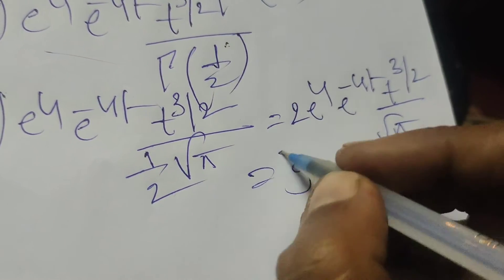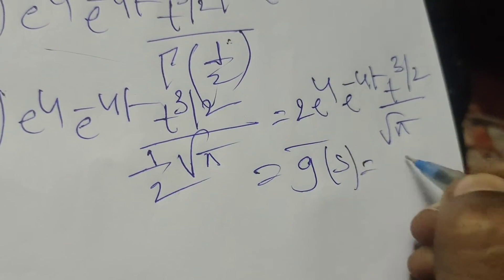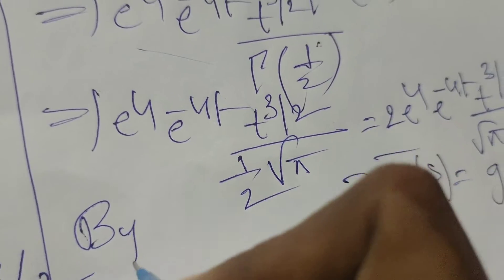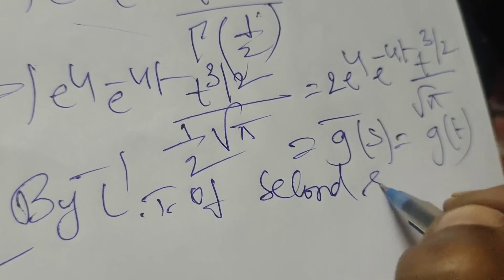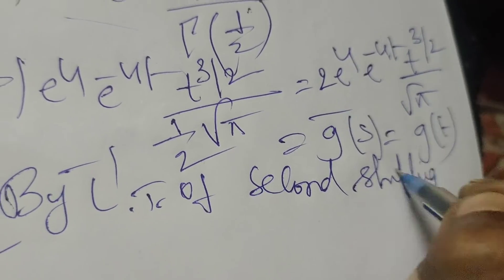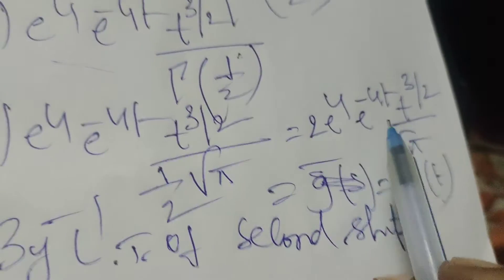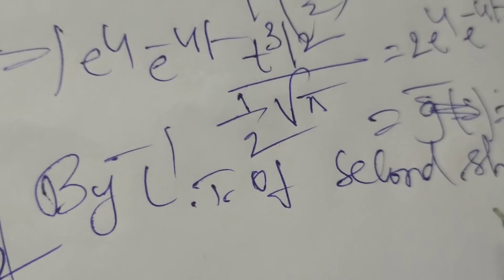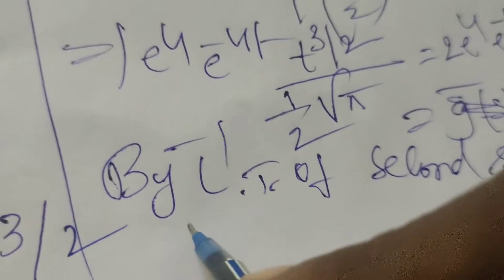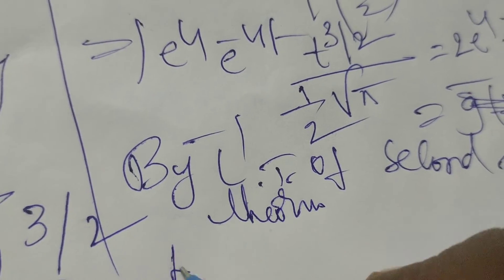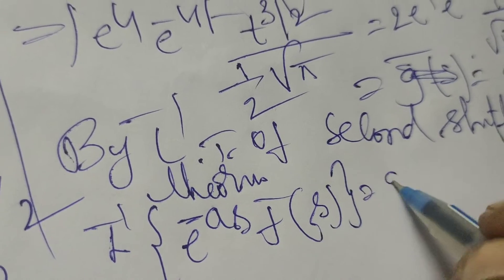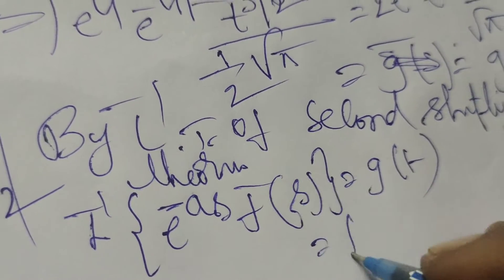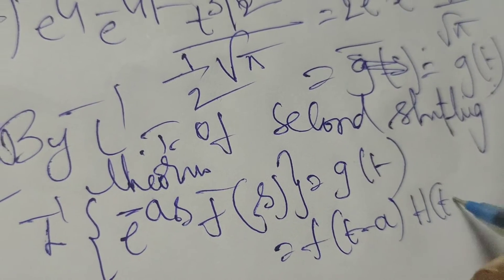Assuming this is F̄(s), the corresponding function is g(t). By the inverse Laplace transform second shifting theorem: the inverse Laplace transform of e^(-as) · F(s) equals g(t), that is f(t - a) times h(t - a), where h is the Heaviside step function.